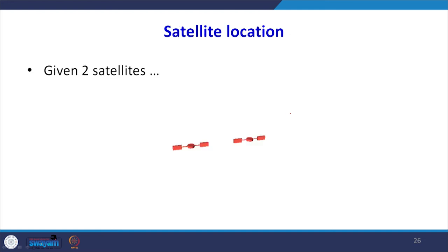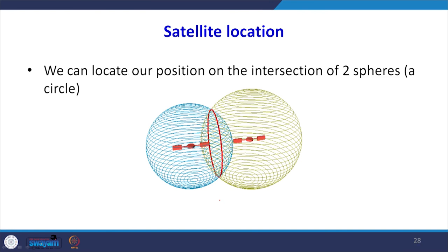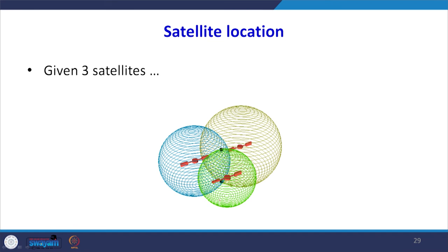If there are two satellites, their zones of influence overlap and when tracking both, the common zone between the two reduces the location area. My location could be anywhere within this common area, so the error zone has been reduced. If I catch a signal from a third satellite, the common area between the three reduces further. You can see it is like a triangle of error that is continuously reducing as the number of satellites increases.